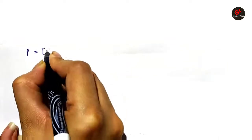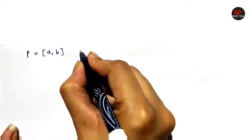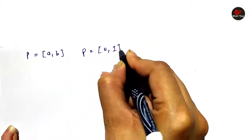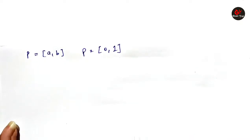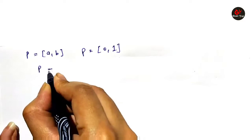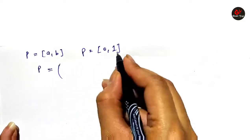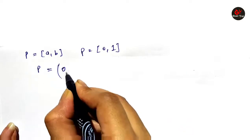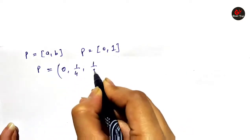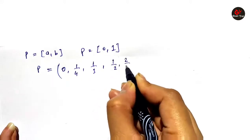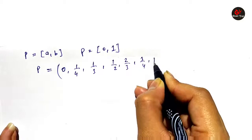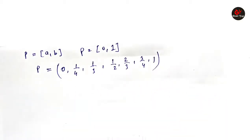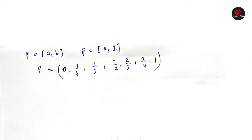Now let me give an example of how we can locate any number of partitions. We need to take a partition of A to B in a closed interval. Let us say we need to locate partitions between 0 and 1. As I mentioned, we can take as many partitions as we want, and 0 and 1 will also be included. So you can write: 0, 1/4, 1/3, 1/2, 2/3, 3/4, 1. In this way we can represent the partition of the interval using any number of elements.